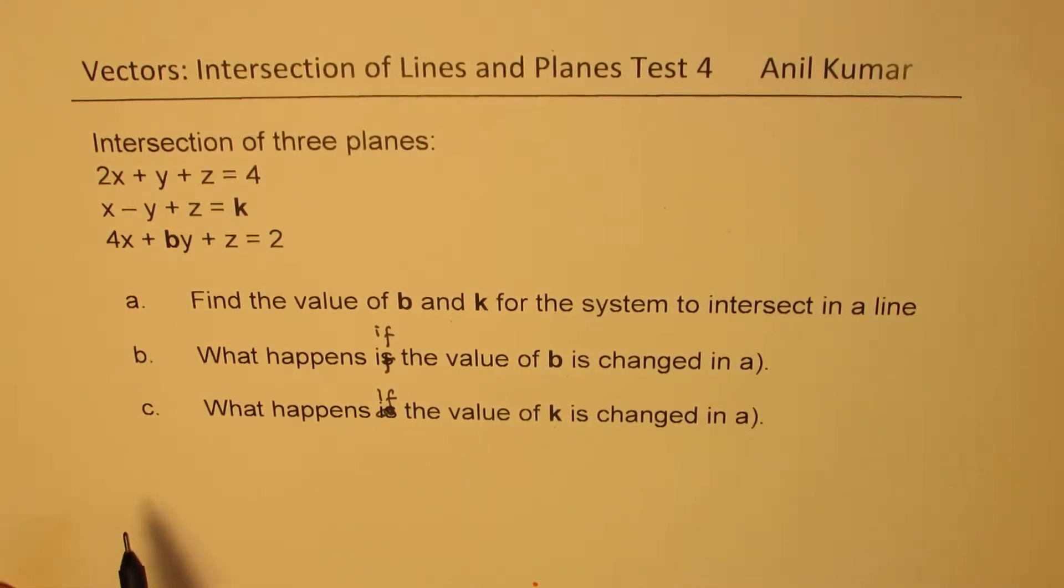We have three parts to this question. First one is find the value of b and k for the system to intersect in a line. What happens if the value of b is changed in a? And what happens if the value of k is changed in a? You can always pause the video, answer the question and then look into my suggestions.